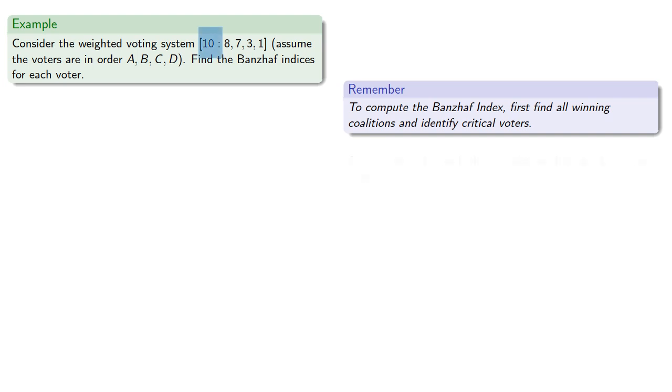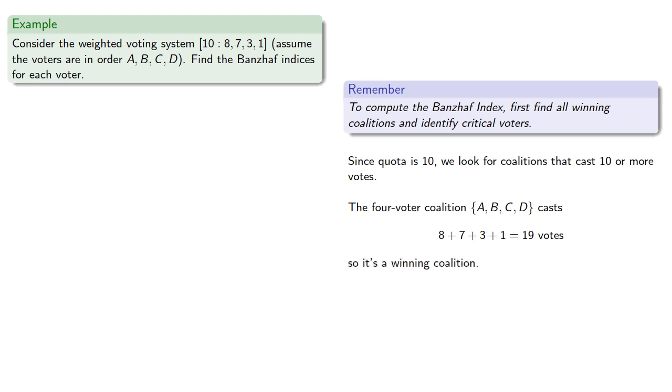Since quota is 10, we look for coalitions that cast 10 or more votes. The four-voter coalition, consisting of all the voters, casts a total of 19 votes. So it's a winning coalition.